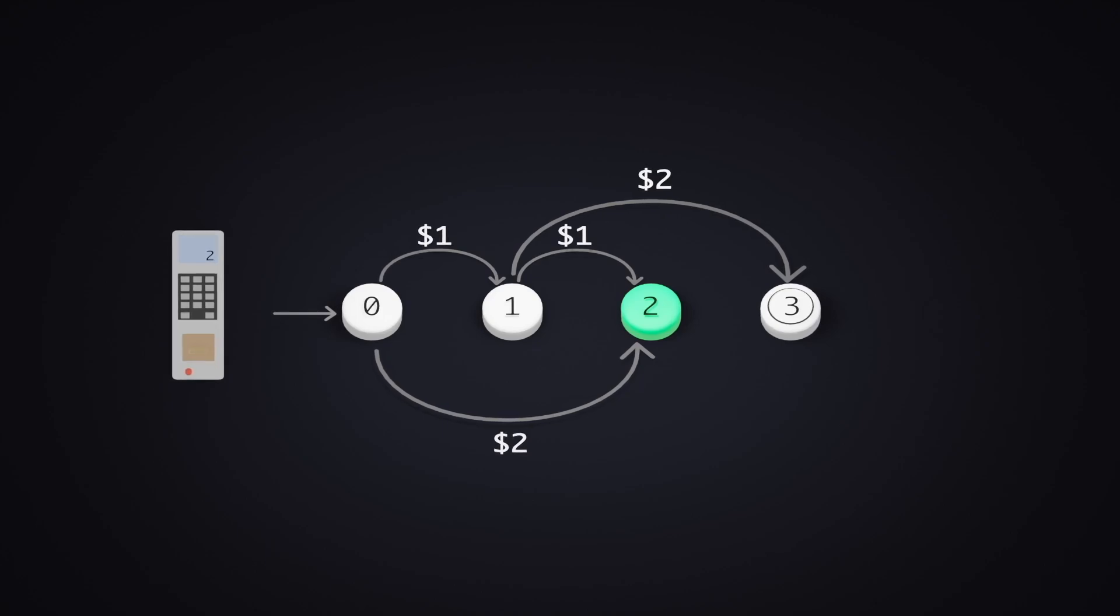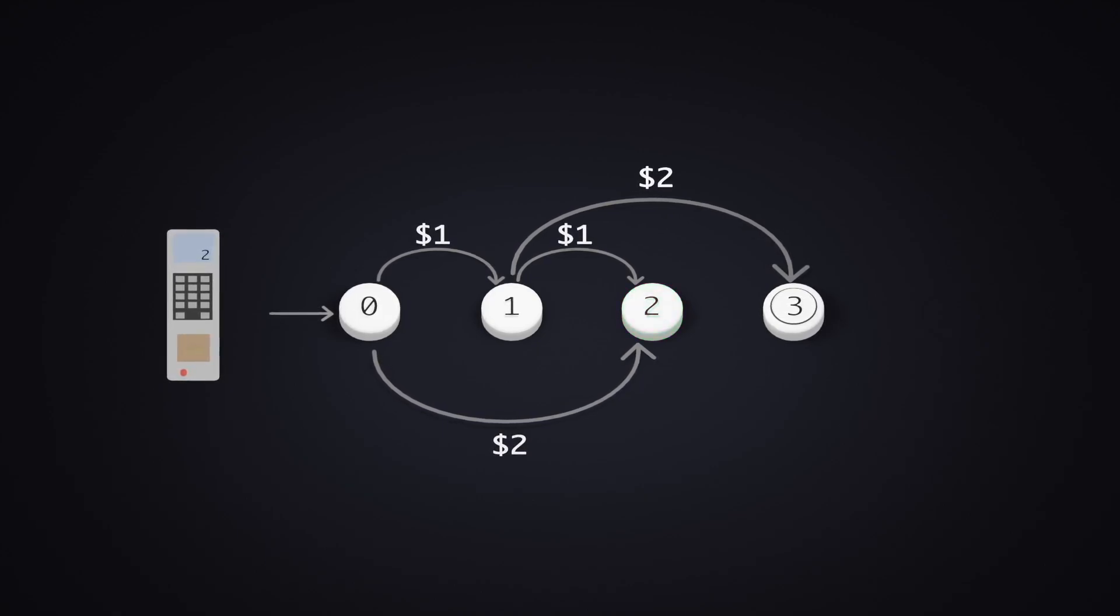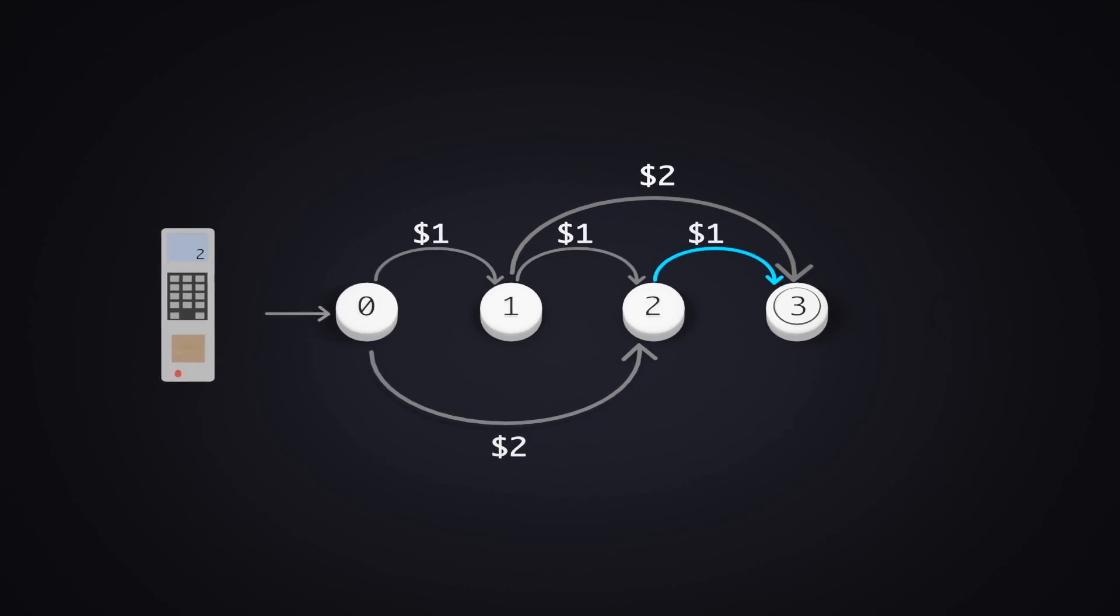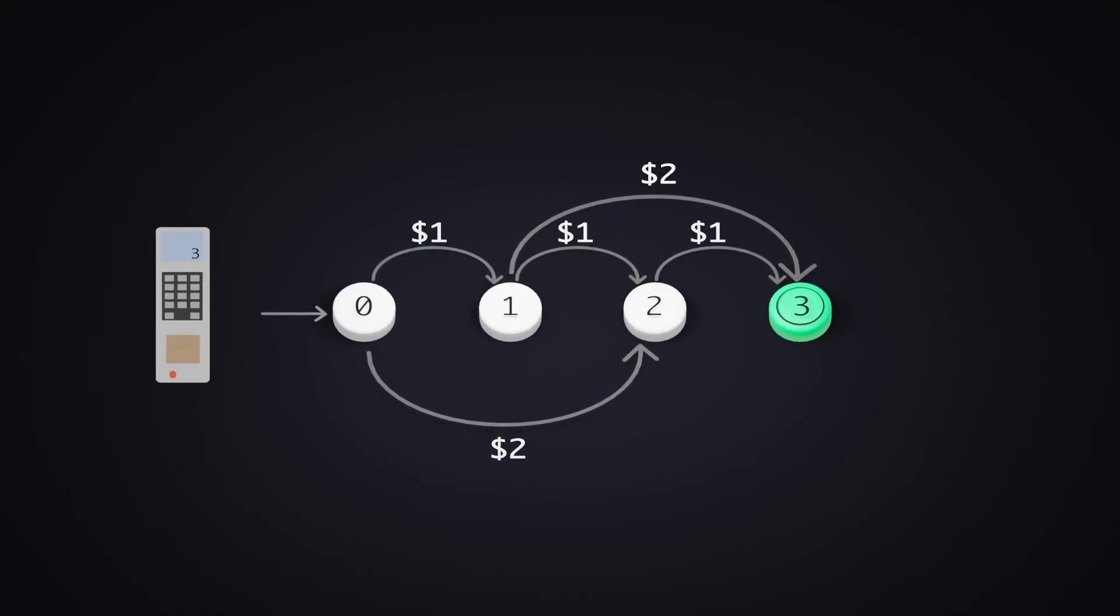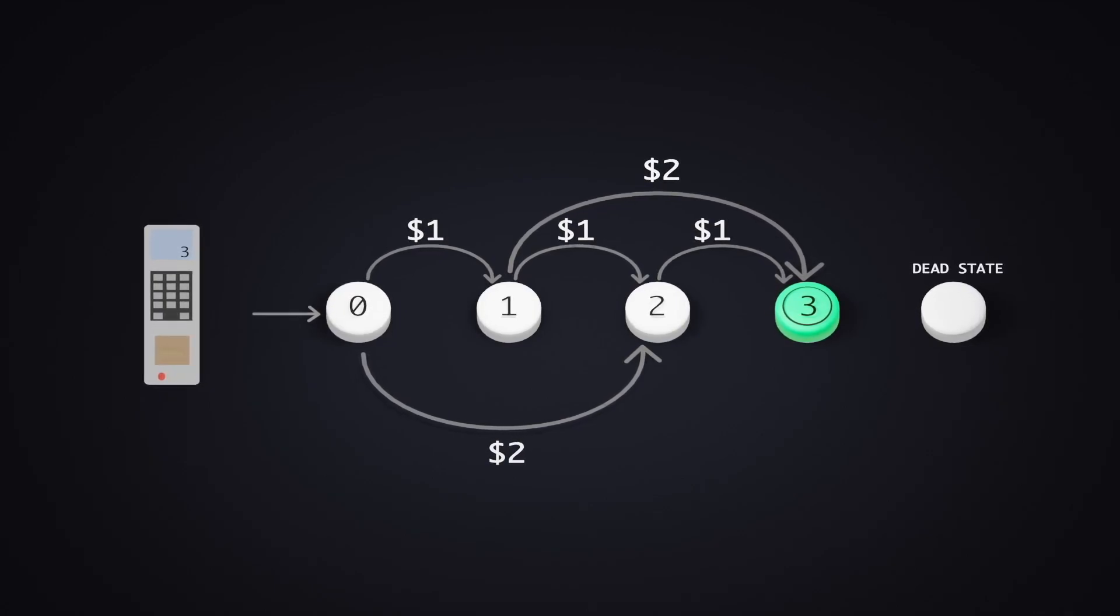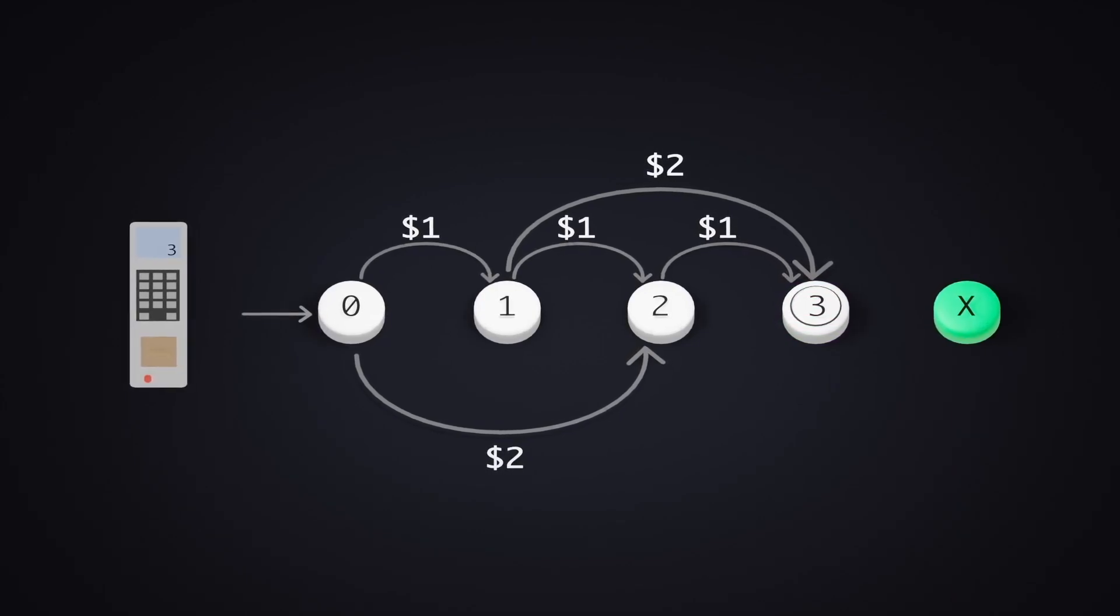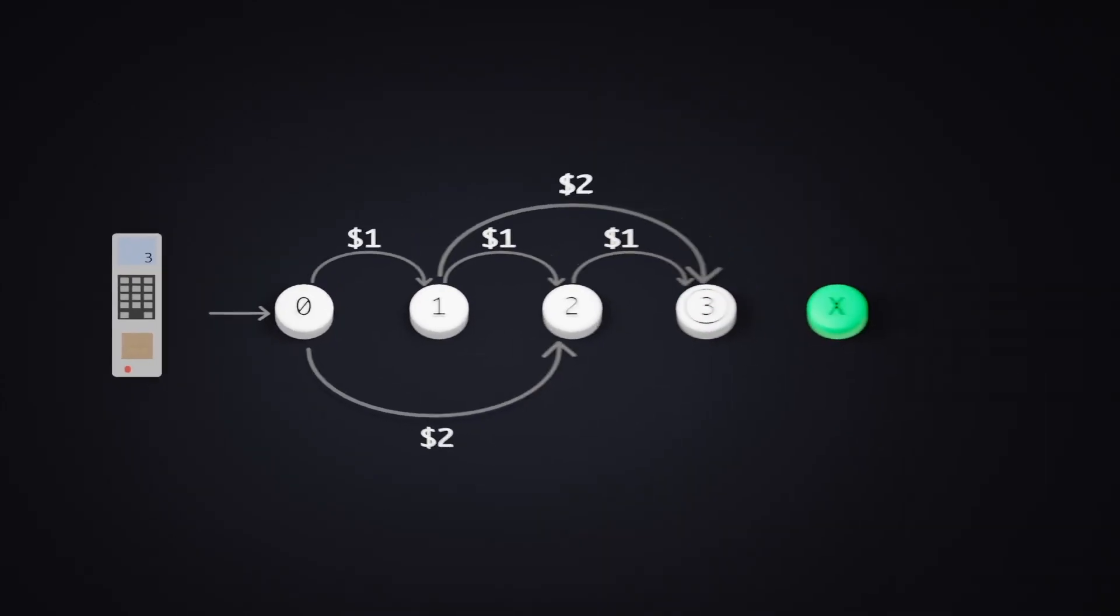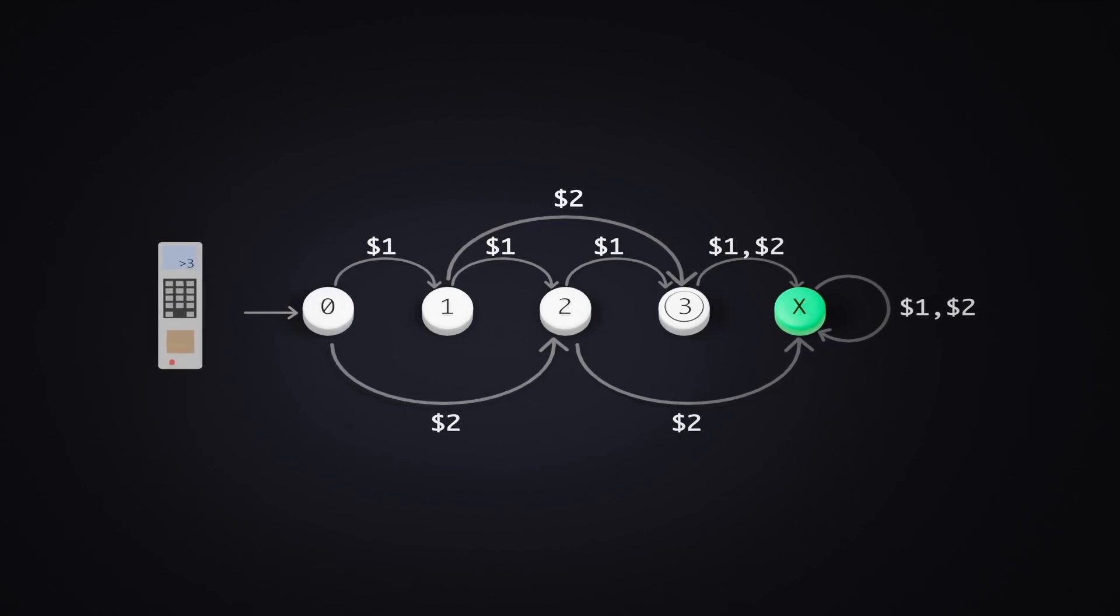Finally, when there are already $2 inserted, we can only insert a $1 note more to get our coffee. We will also have a special state for this vending machine called the dead state, denoted as X. This state is where the machine transitions to if it receives more than $3, rejecting all the money you put in.